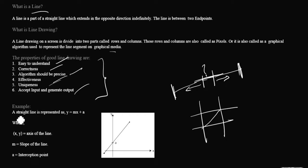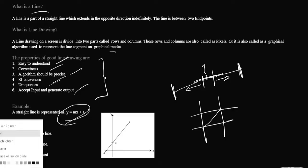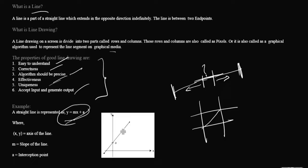A straight line is represented as y = mx + c. Here, if you see this diagram, this is a line drawing algorithm — a straight line represented on a 2D graph. Here x and y are the axes of the lines on the 2D plane, whereas m is the slope of the line, which indicates this is an inclined line. Whatever point is intercepted is called the interception point.